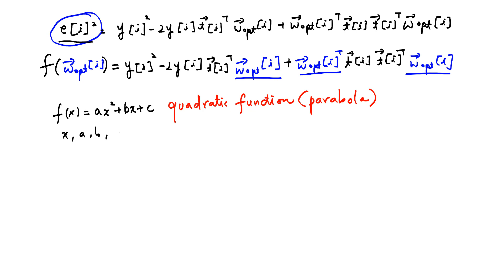x, a, b, c are real numbers. When a is greater than 0, we have this function, which is a parabola, and it's a convex function.